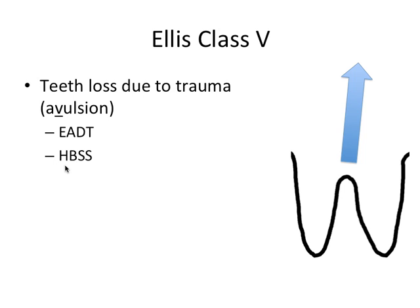Optimal storage for that tooth is Hank's Balanced Salt Solution, a tissue culture medium — the ideal situation to store a tooth that has been lost from the mouth. When seen by the dentist, the dentist would carefully remove the clot, gently irrigate the socket with saline, re-implant the tooth, and then place a semi-rigid splint for about 7 to 10 days, prescribe antibiotics and maybe a tetanus booster, and after those 7 to 10 days perform root canal therapy for a closed apex, or apexification for an open apex tooth.